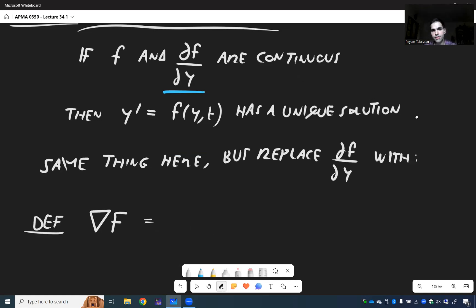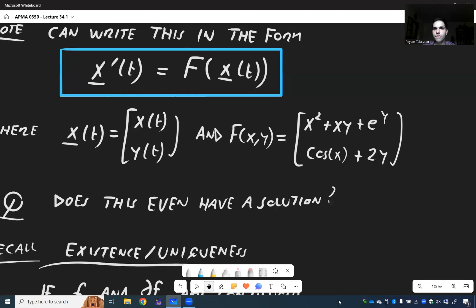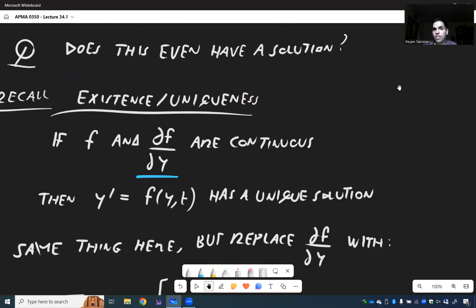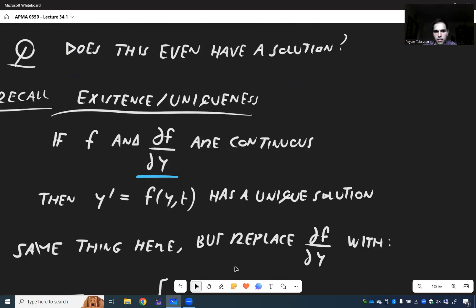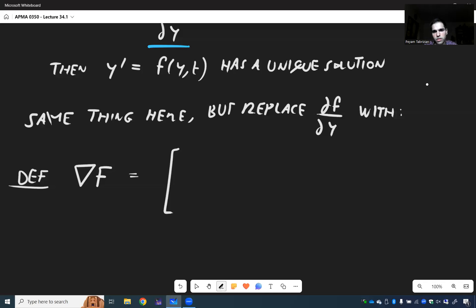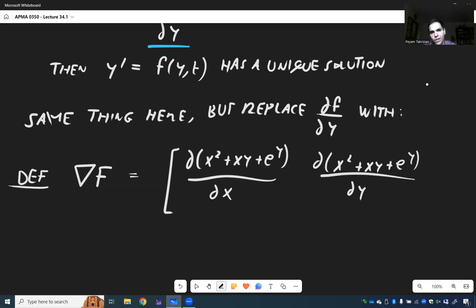And again, remember what f was. It was this vector here, and literally all you do is differentiate both components with respect to all the variables. So in this case: partial of x squared plus xy plus e to the y with respect to x, partial of x squared plus xy plus e to the y with respect to y, then partial of cosine x plus 2y with respect to x, and partial of cosine x plus 2y with respect to y.